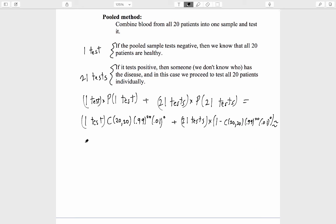This is approximately equal to 1 test times .8109 plus 21 tests times the complementary probability, which is .1891.